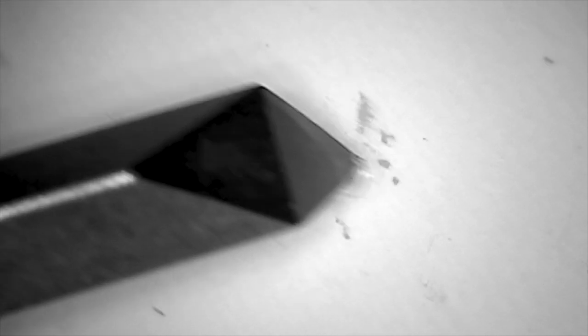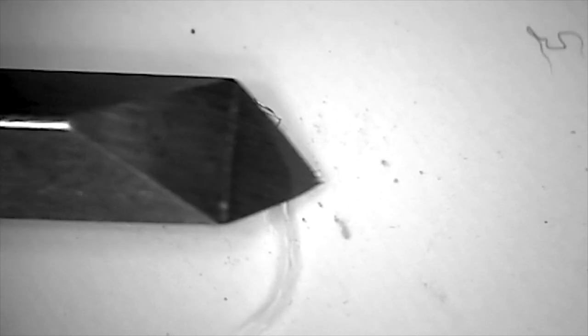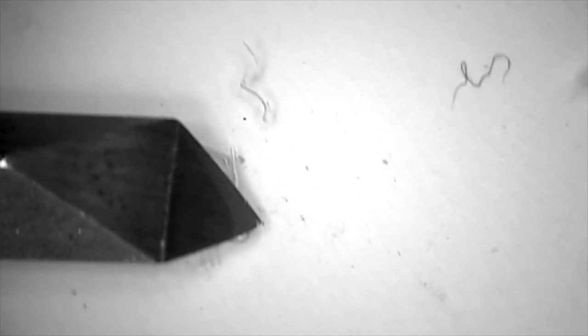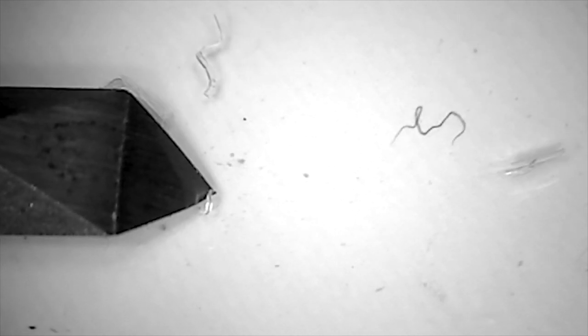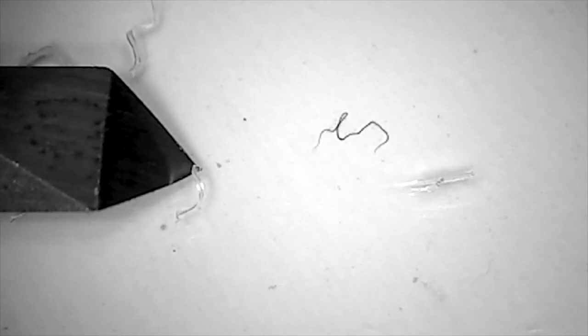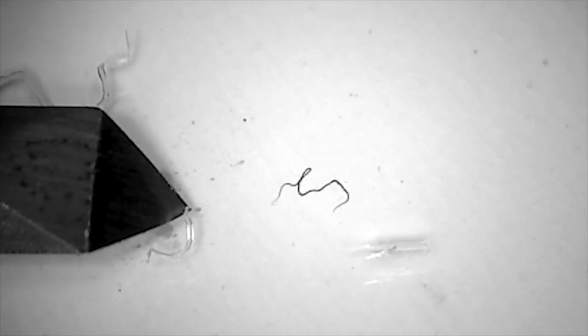When you feel comfortable doing that, you can try to work on a curve line. In order to do that, you want to keep the burin in a locked position and then rotate the plate. Feed that plate into the burin. It's kind of like the reverse of the turntable of a record player. That's how you make the curve line.